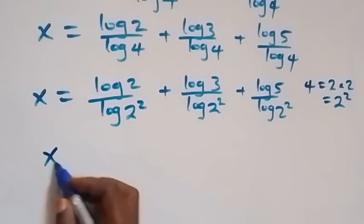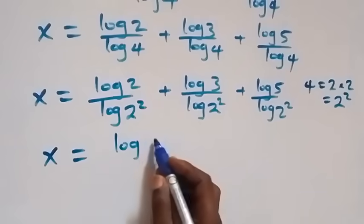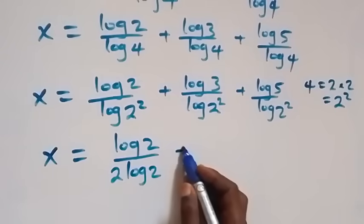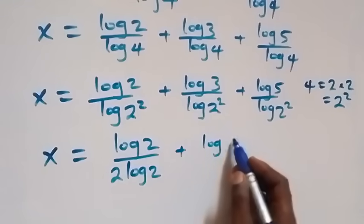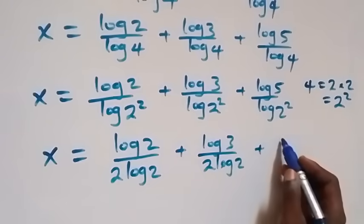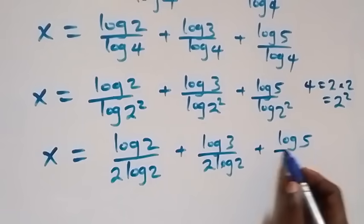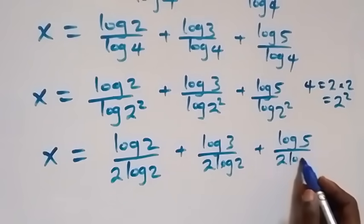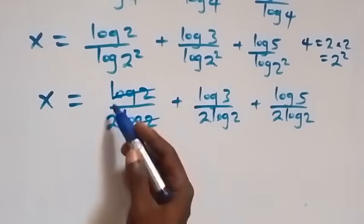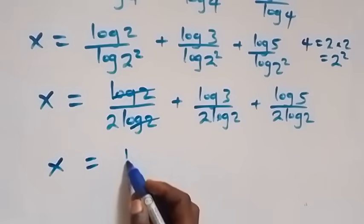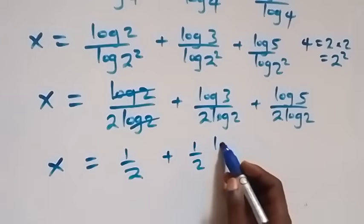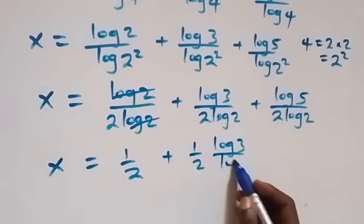Applying the power law, the 2 comes to the front: x equals log 2 over 2 log 2, plus log 3 over 2 log 2, plus log 5 over 2 log 2. Here, log 2 cancels in the first term and we are left with 1 over 2, so x equals one half, plus one half times log 3 over log 2.